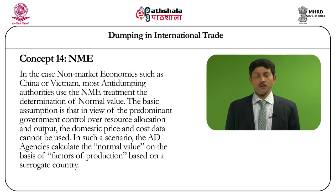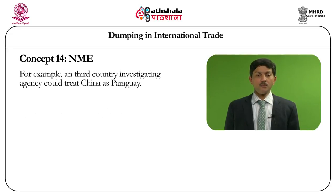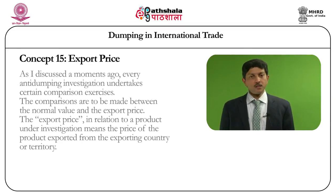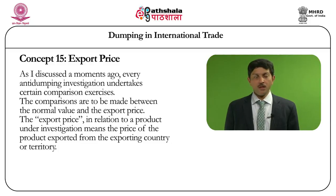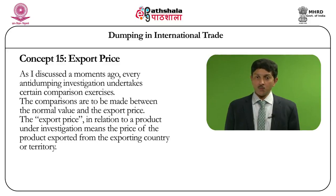In such a scenario, the anti-dumping agencies calculate the normal value on the basis of production based on surrogate country prices. For example, a third country investigating authority could treat China as Paraguay and take the cost of production details from a company situated in Paraguay. Every anti-dumping investigating authority takes into account the normal value and the export price for comparison purposes. The comparisons are to be made between the normal value and the export price for a particular period of investigation. The export price in relation to a product under investigation means the price of the product exported from the exporting country or territory to the country taking the anti-dumping investigation.